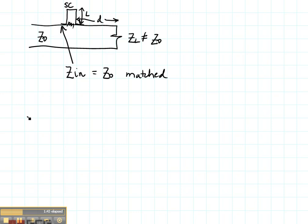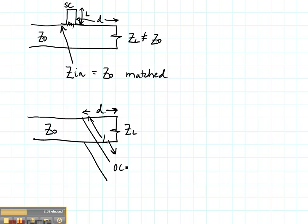Another way to do this is to use a parallel stub. That's again where our load is not equal to our characteristic impedance, and we just put a stub in parallel. Again, we define D, we design D, and we design L, and this one is shown as an open circuit.